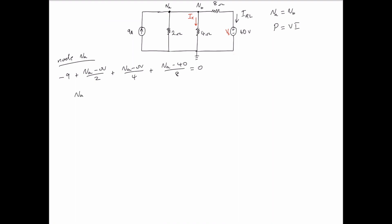So, factoring out VA, we get VA times (1/2 plus 1/4 plus 1/8) minus 40/8 equals 9.